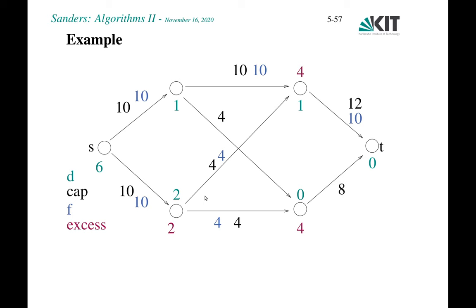After relabeling to 7, we push this flow back to the sink. Since the source is never active, we manage to deactivate this node. By this roundabout way we got rid of the excess — which was unavoidable since both outgoing edges had capacity 4, clearly insufficient. So returning the excess to the source was the right decision, otherwise the algorithm would never terminate.